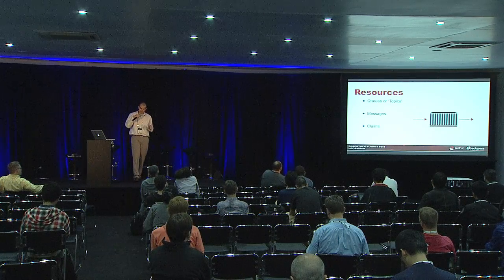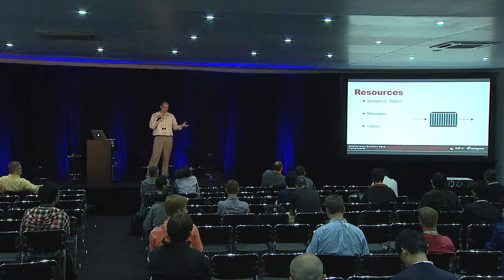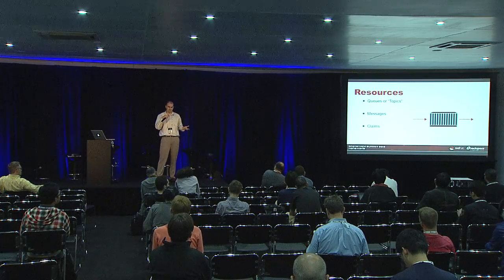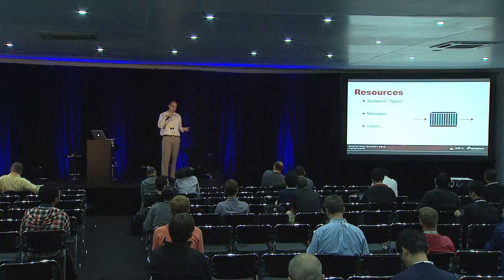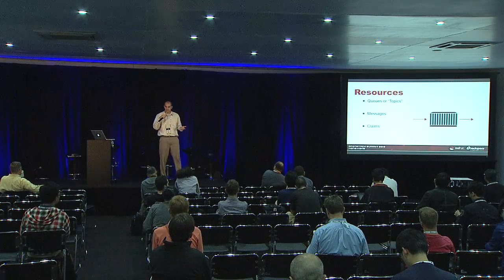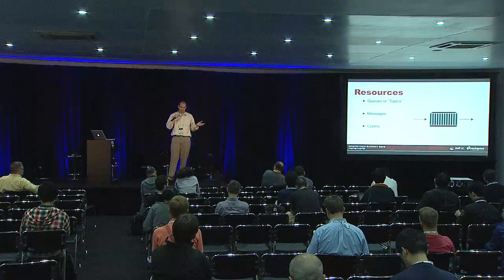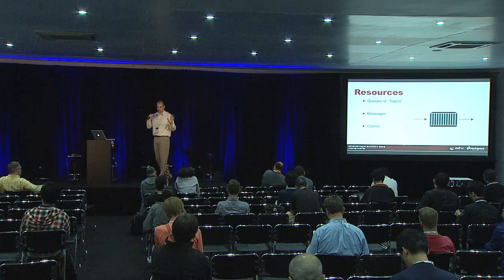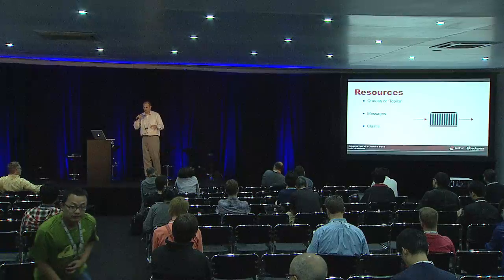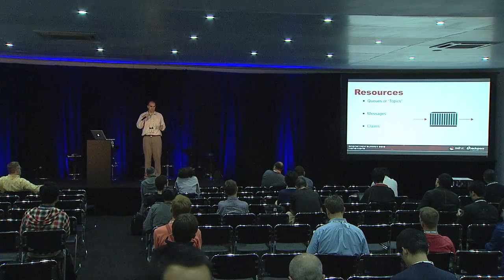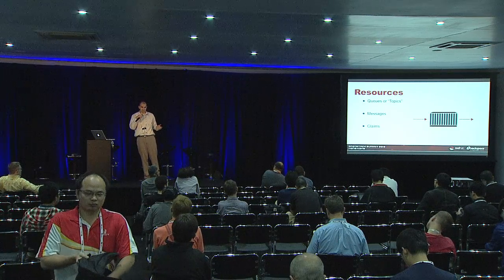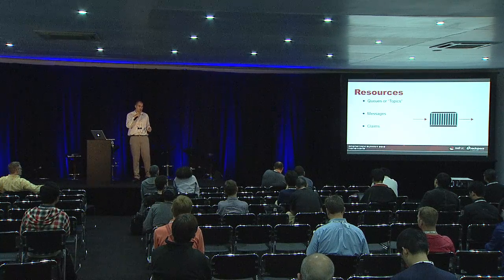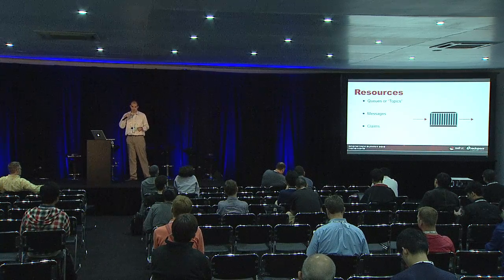Out of those concepts, to make this more concrete, the API has a notion of queues — or you can think of these as topics. Then of course we have messages and claims. Each one of these has different kinds of operations, a lot of what you would expect and maybe a few things that you don't. Let me take a couple of minutes and walk through the different operations you can do on each resource.